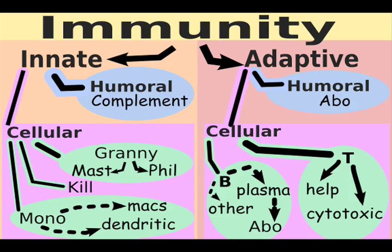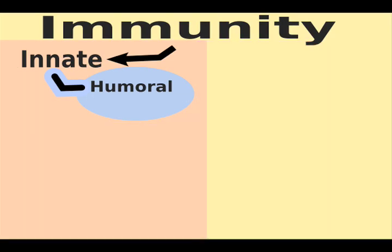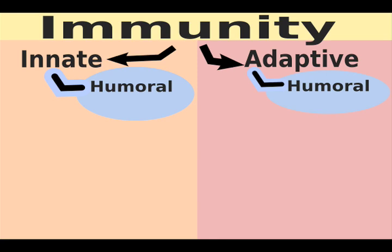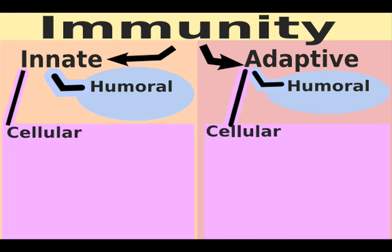This dreaded diagram really has four quadrants: innate humoral, adaptive humoral, innate cellular, and adaptive cellular. Let's look at each quadrant in turn.